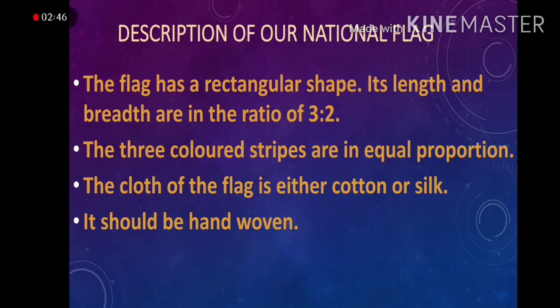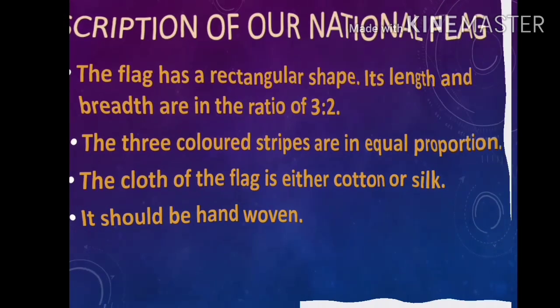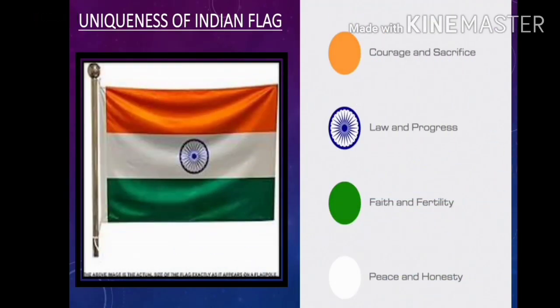The flag has a rectangular shape; its length and breadth are in the ratio of 3:2. The three colored stripes are in equal proportion. The cloth of the flag is either cotton or silk and should be hand-woven. Each color represents its significance: saffron is for courage and sacrifice, green for faith and fertility, white for peace and honesty, and the Chakra represents law and progress.